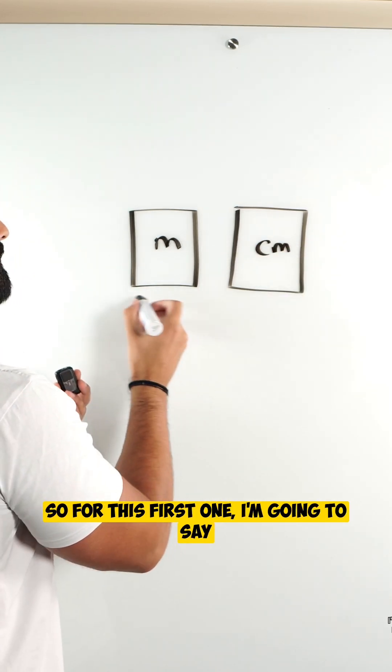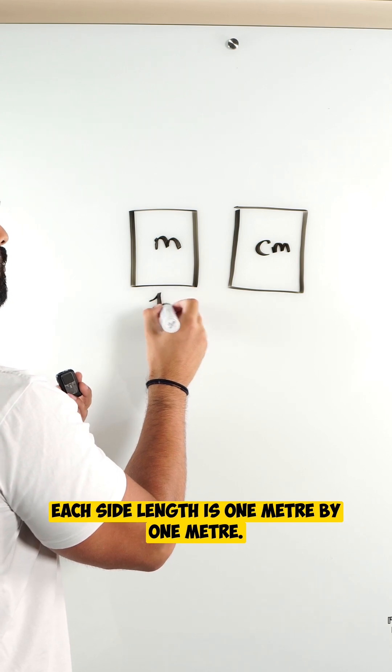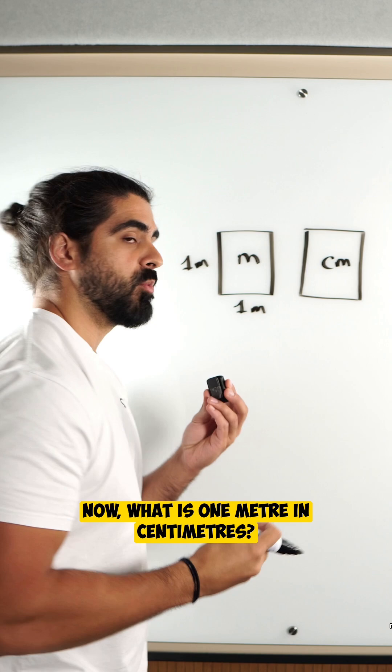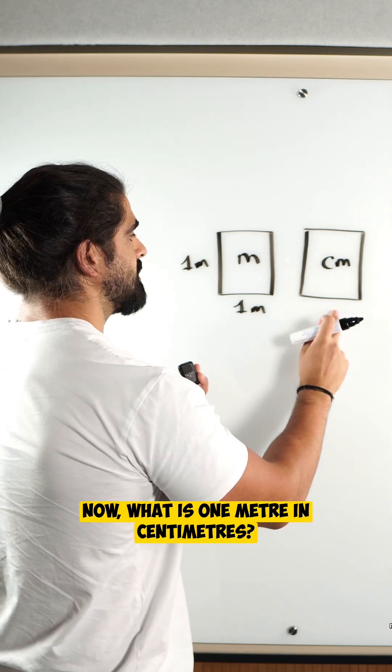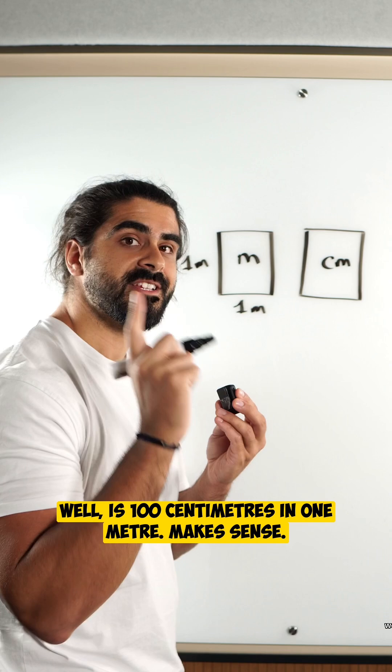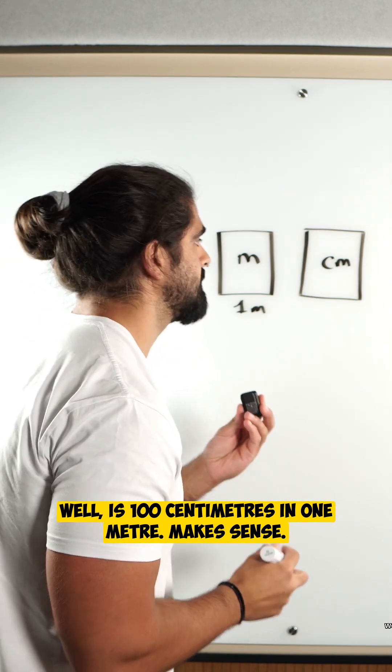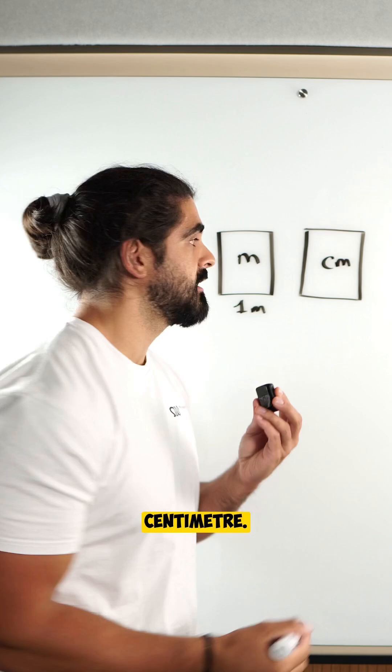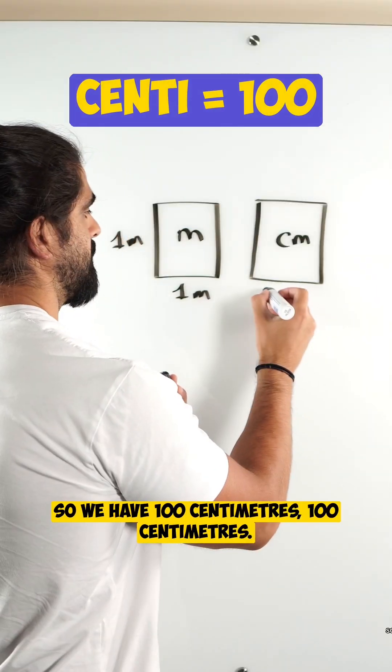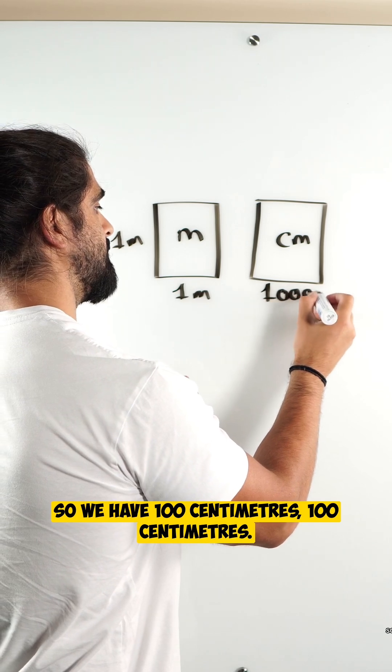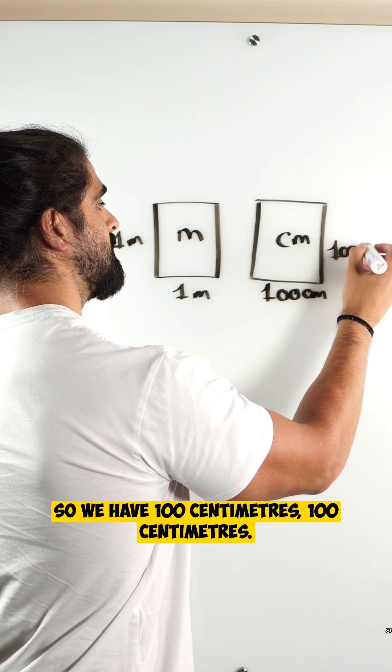So for this first one I'm going to say each side length is one meter by one meter. Now what is one meter in centimeters? Well there's a hundred centimeters in one meter. Makes sense. Centimeter, centi meaning 100. So we have 100 centimeters.